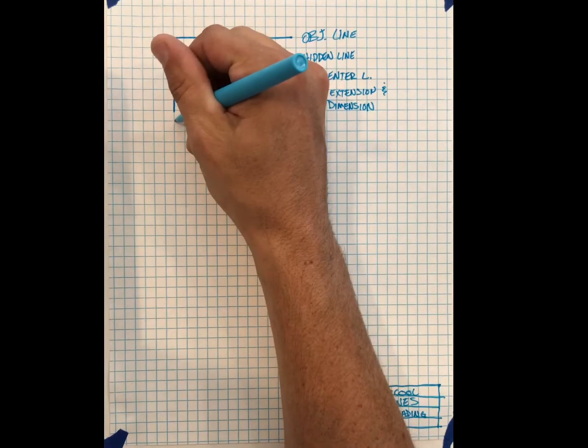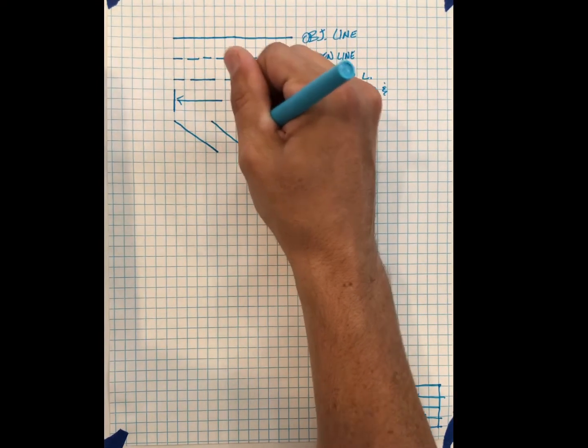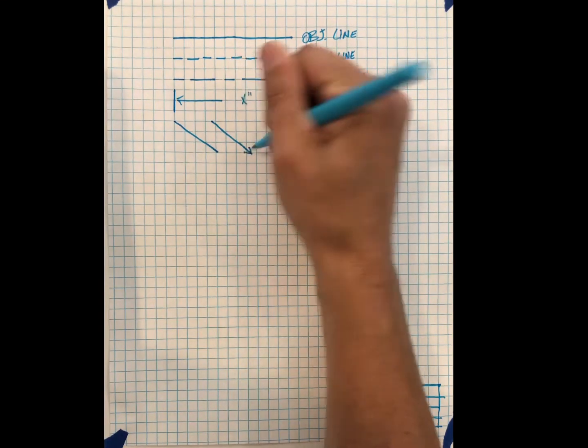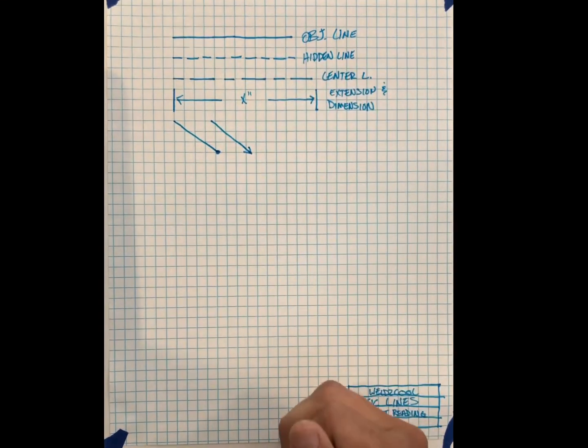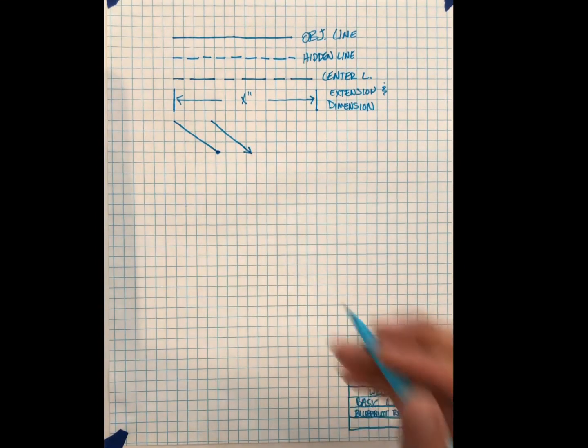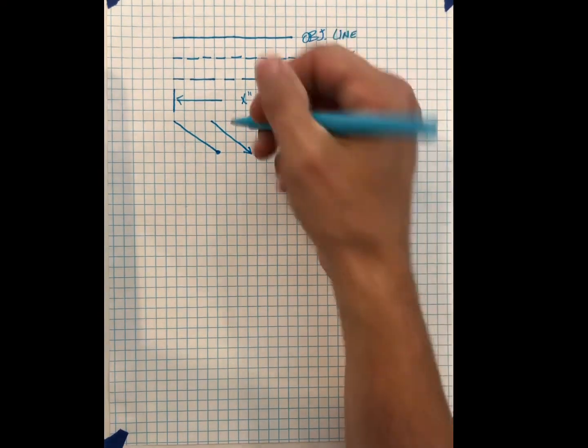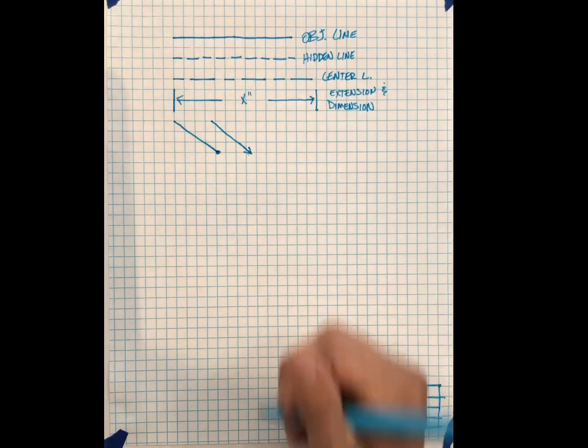Next thing are leaders. Leaders usually come off on an angle, some type of an angle. We basically have two leaders, one with an arrow and one with a dot. If it's on a surface, we use a dot. And that's telling us it's painted, it is ground, it is steel, it's aluminum, it's stainless. But an arrow points to another line.